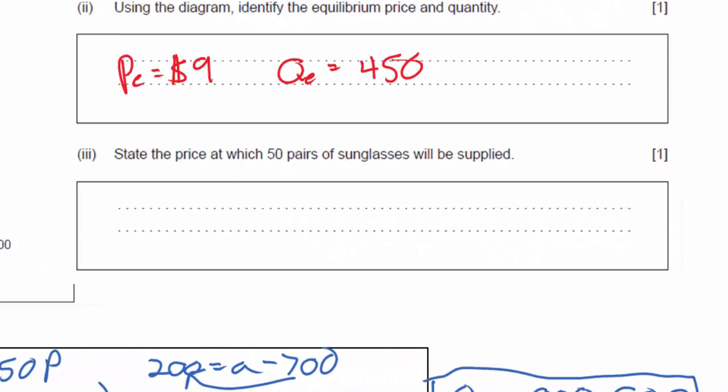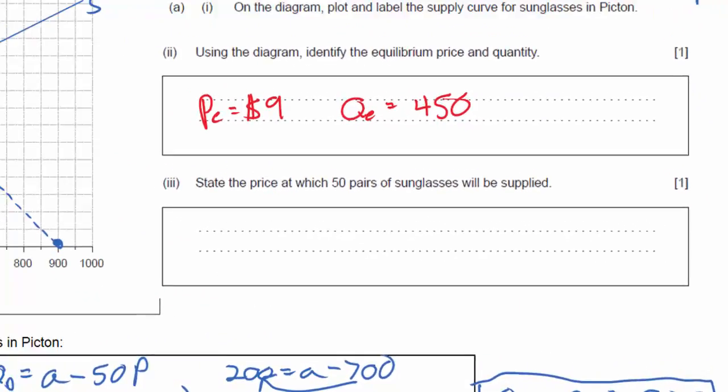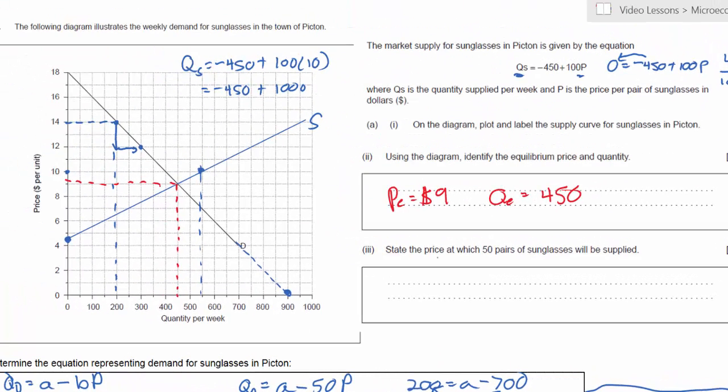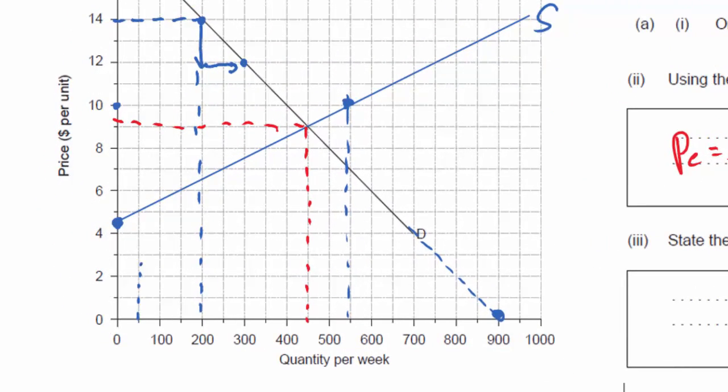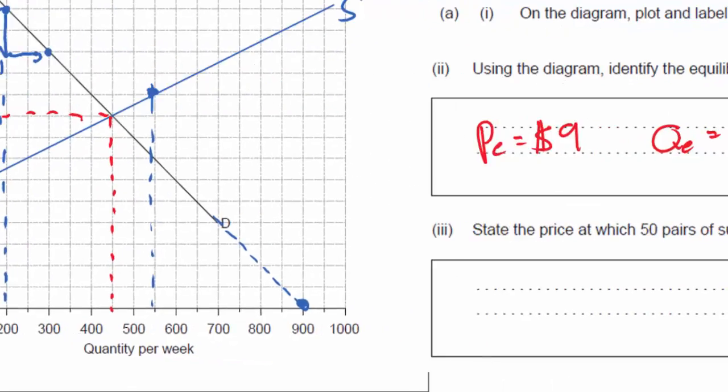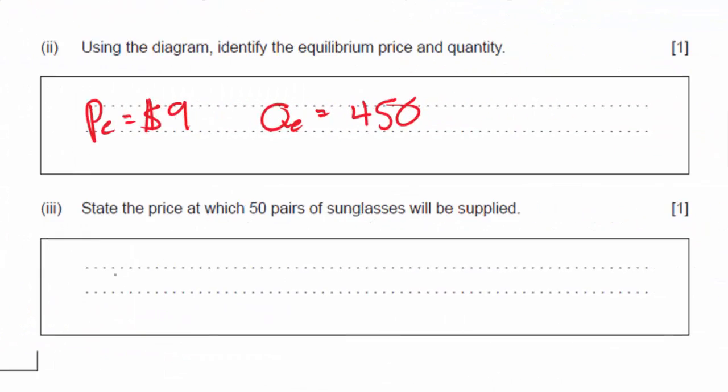State the price at which 50 pairs of sunglasses would be supplied. There's a couple ways we could approach this one. We could look at our supply curve and estimate by going from a quantity of 50 up to the supply curve. And we can see that should be around $5.00. But just to prove it I'm going to plug 50 into my supply equation and solve for P.